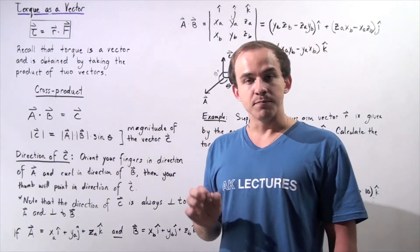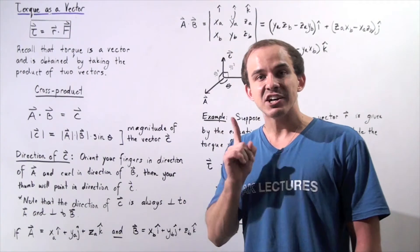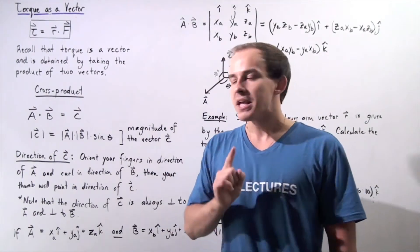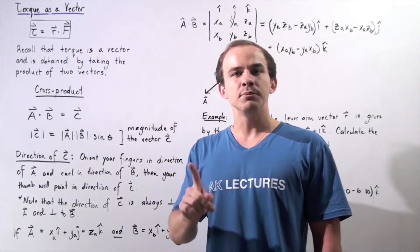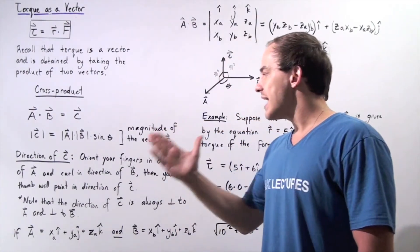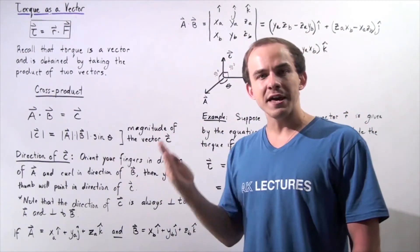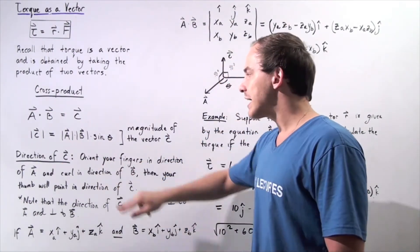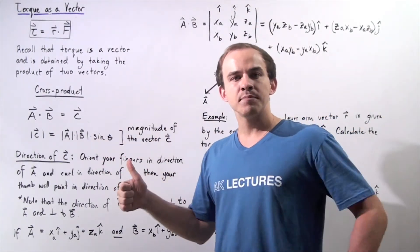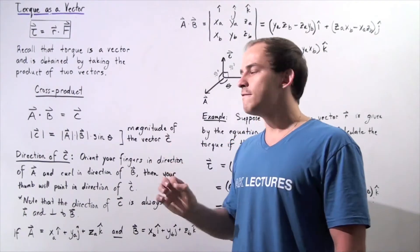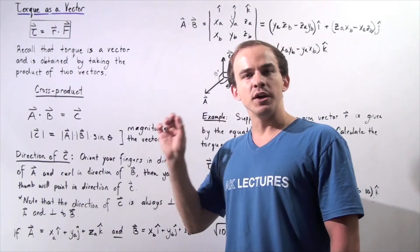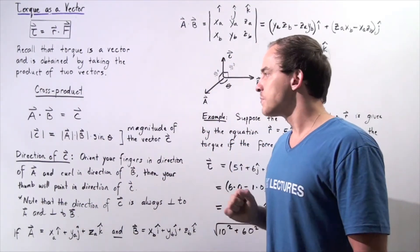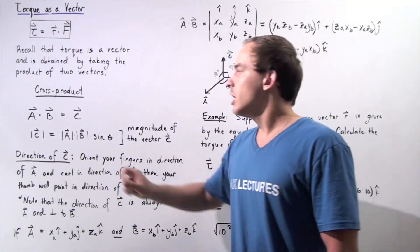Since C is a vector, it not only has magnitude given by that equation, but it also has direction. To find direction, we apply something called the right-hand rule. We take our right hand, orient our fingers in the direction of vector A, and then curl the fingers in the direction of vector B. We extend the thumb and the thumb points in the direction of vector C. Note that the direction of vector C is always perpendicular to both vector A and vector B.